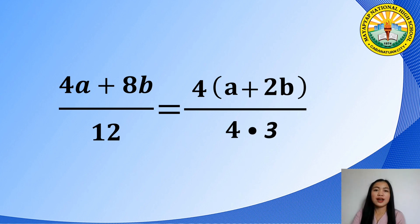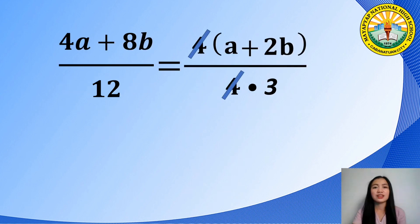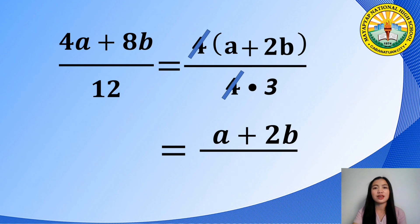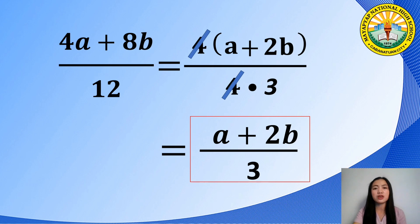Step 2: cancel out the expressions that are the same in both the numerator and denominator. If the numerator and denominator of a fraction are the same, it is equal to 1. Therefore, 4 divided by 4 equals 1. The last step is to rewrite any remaining expressions: the remaining expression in the numerator is a plus 2b, and in the denominator is 3. So the simplest form of 4a plus 8b all over 12 is a plus 2b all over 3.